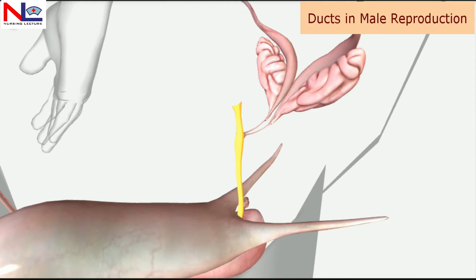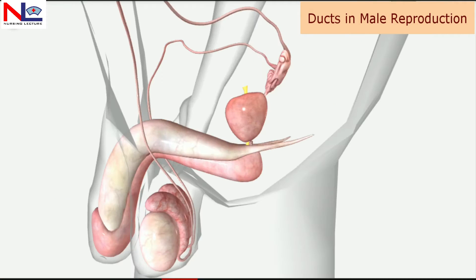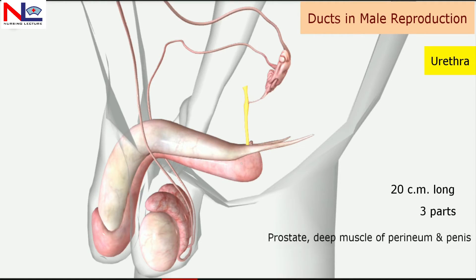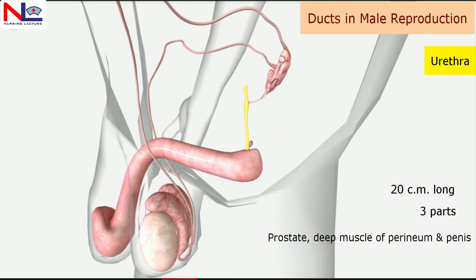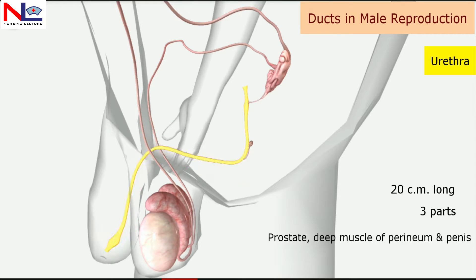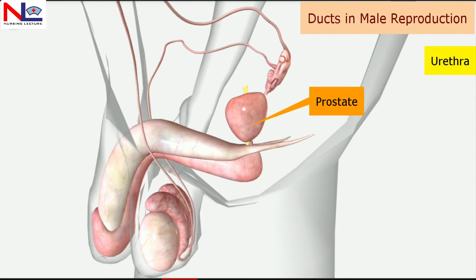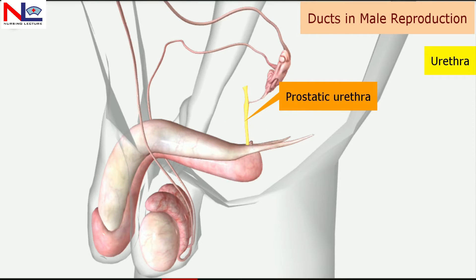The sperm as well as the secretion from the seminal vesicle both drain into the ejaculatory duct and then into the prostatic urethra. The next duct is the urethra, which is about 20 centimeters long and has three parts, because it passes through the prostate, the deep muscles of the perineum, and through the penis. When it passes through the prostate, it is termed the prostatic urethra.